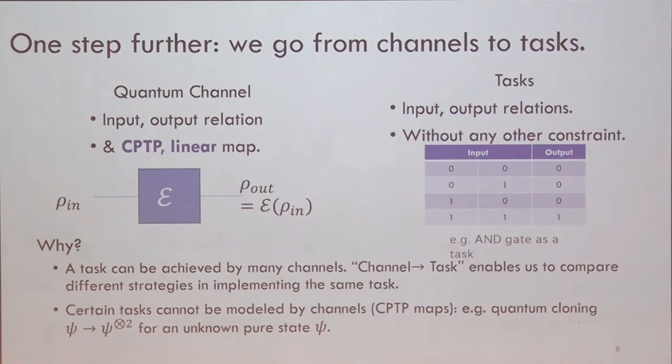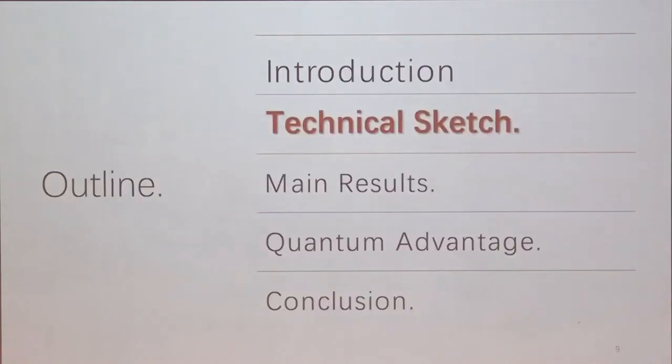And why we do this? Because, first, one task can be achieved by many channels. So given by a calculation, there are many ways to do this calculation. Secondly, certain tasks cannot be modeled by CPTP maps, because quantum mechanics forbids you to do it. For example, we consider quantum cloning. Perfect quantum cloning is impossible. So that means there's no CPTP map that can model this task for quantum cloning. But still, you can define an input-output table by assigning all the transitions between the pure states. So this generalizes from channels to general tasks.